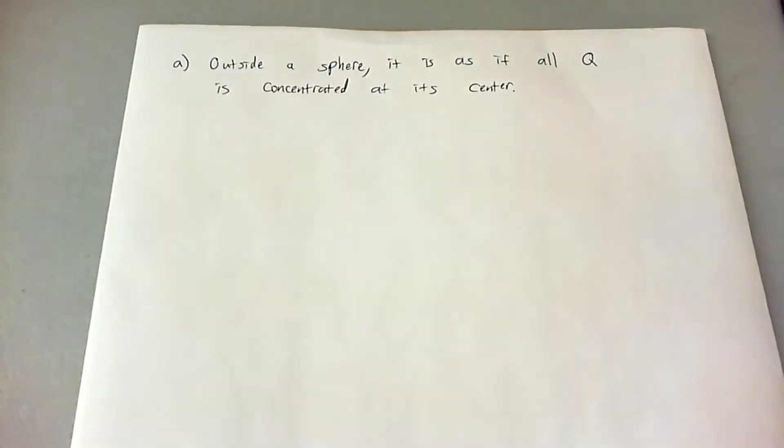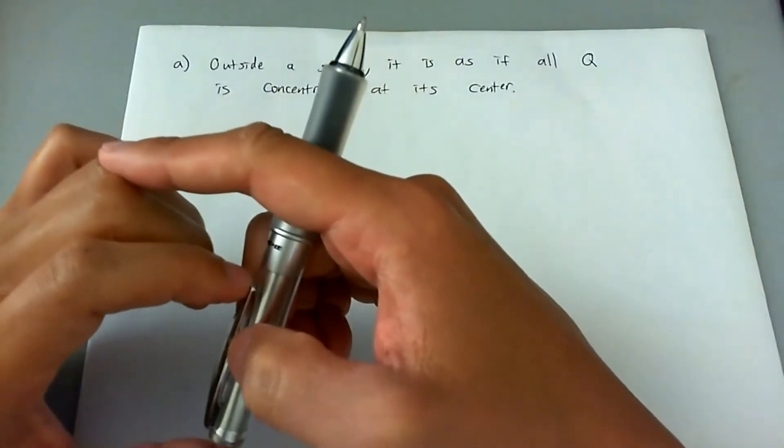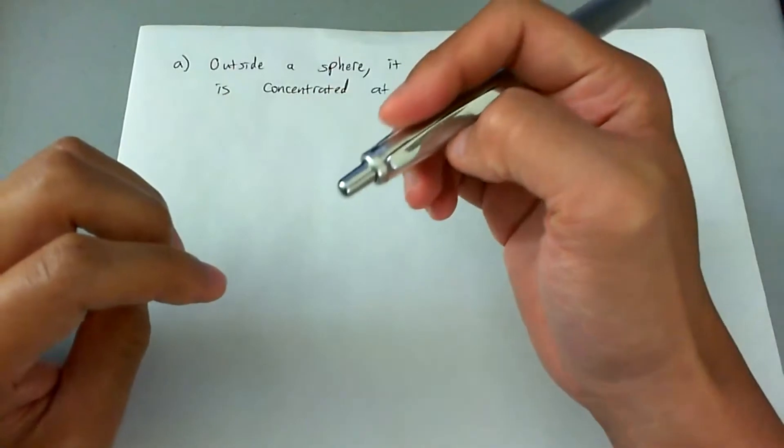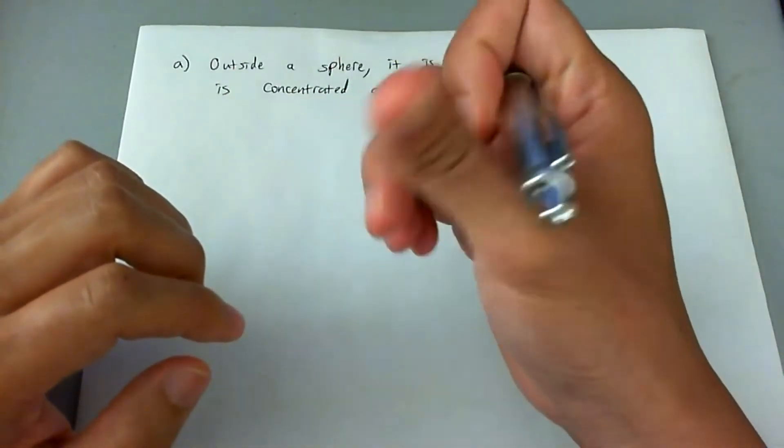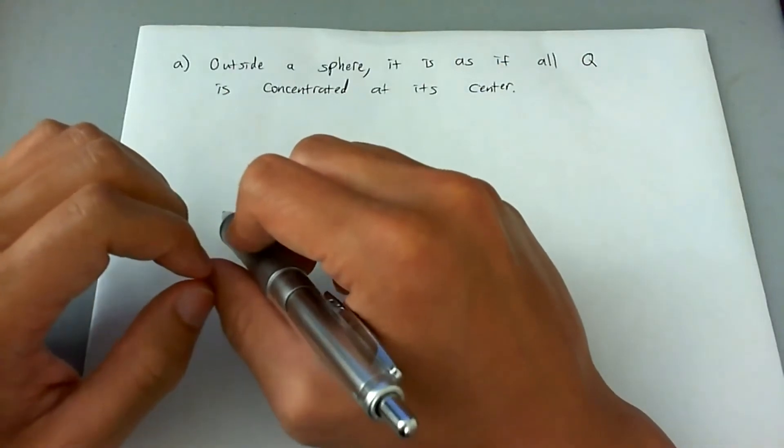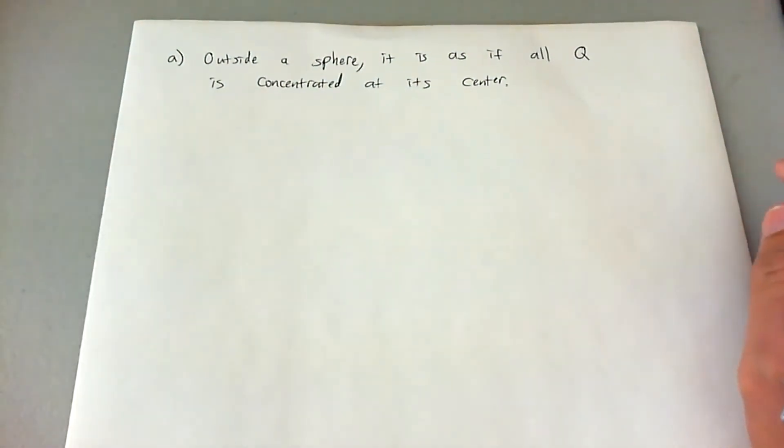For part A of the problem, it's actually quite simple. For any electric field outside of a uniformly charged sphere, it's as if there is a single charge at the very center of it. So finding the E field of a uniformly charged sphere outside of it just means you're finding the E field of a point charge at the center of the sphere itself.